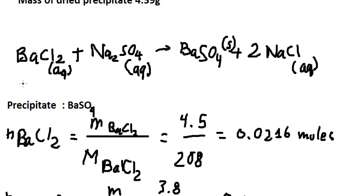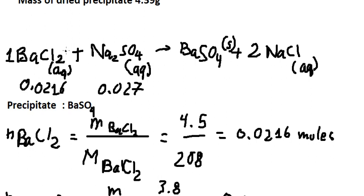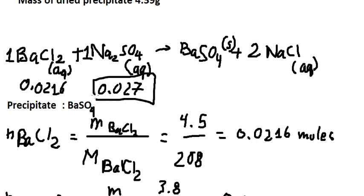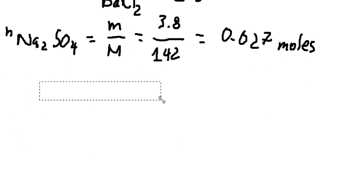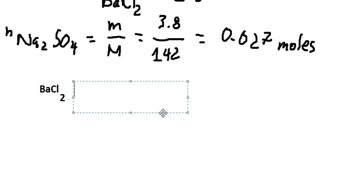So we put the moles in here. We can see that the coefficients are both 1, so we multiply by 1 and divide by 1. We can see that 0.0216 is smaller than 0.027, so we can say barium chloride is the limiting reactant.